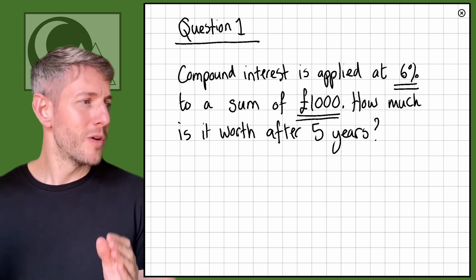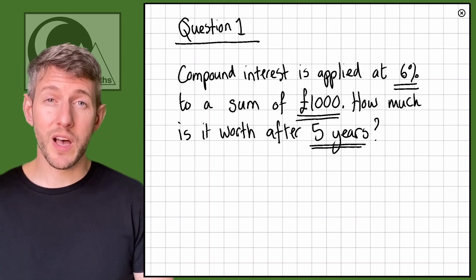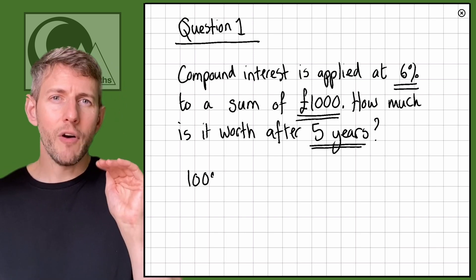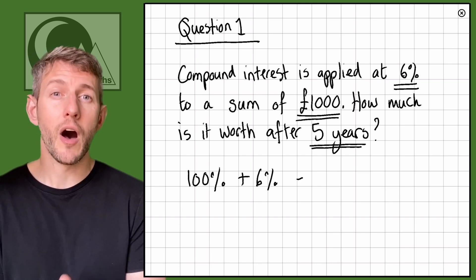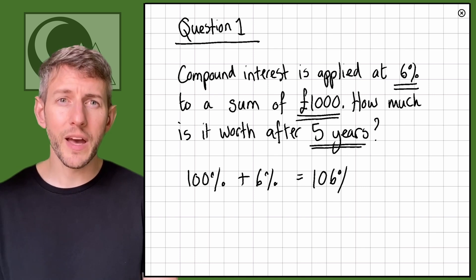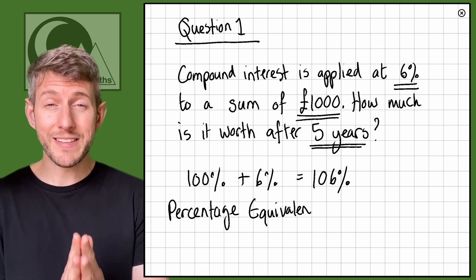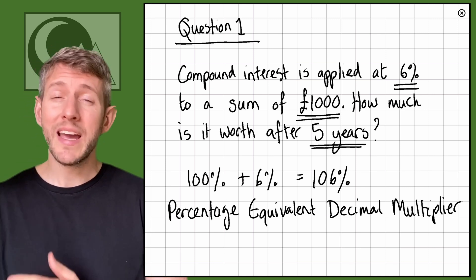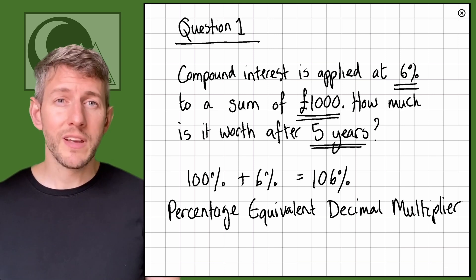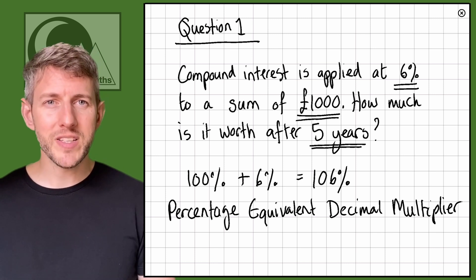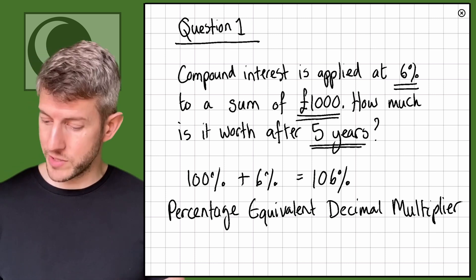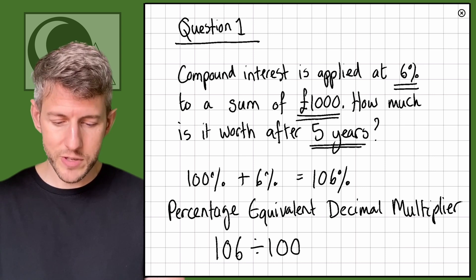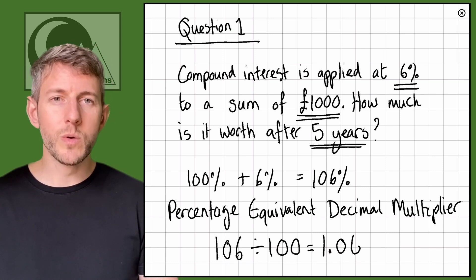So, compound interest is applied at 6% to a sum of £1,000. How much is it worth after five years? If I want to increase an amount by 6%, I'm essentially looking for 106%. To find the percentage decimal equivalent multiplier, I divide by 100: 106 divided by 100 equals 1.06.